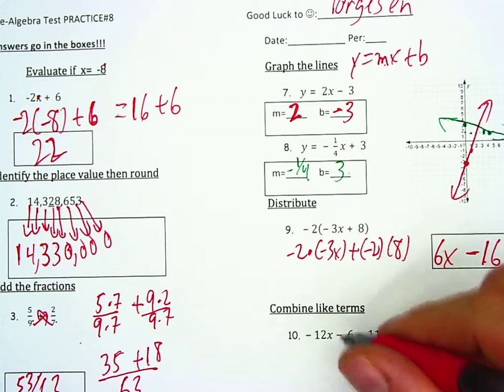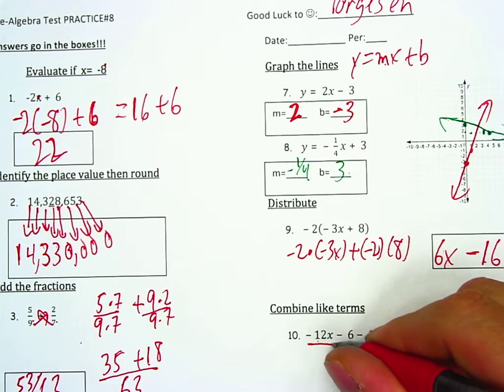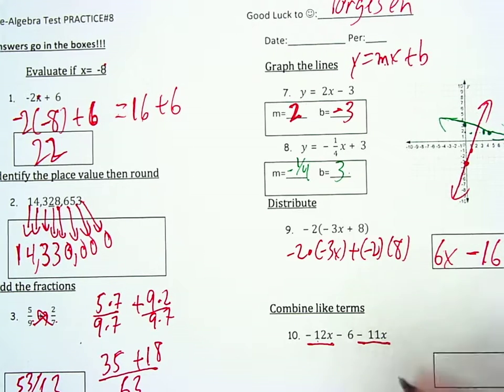Combine like terms. We're going to combine the 1s with x. So they're both negative, negative 12 and negative 11. So they're the same signs that I'll add to make negative 23x. The minus 6 will be at the end.